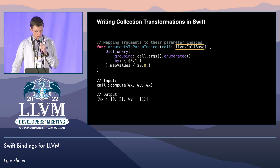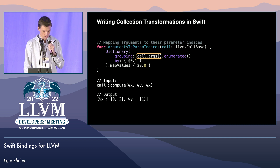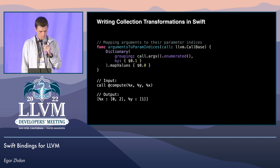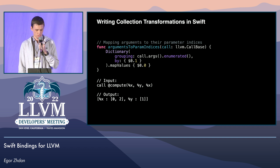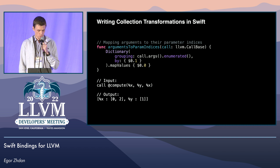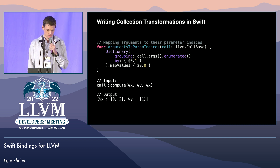Let's take a look at a small example of how we can use LLVM from Swift. Here we have a Swift function that takes a parameter of the C++ type LLVM CallBase. In the body of the function, we call a C++ method args, which returns an instance of a Swift sequence. This allows us to write clear and concise code for collection transformations by leveraging Swift's standard library. As you can see in this code, we use the enumerated method and the dictionary initializer that are provided by the Swift standard library. For instance, if we need to map arguments of a call to their parameter indices, that can be written in a couple of lines of Swift code. Transformations like these can require more C++ code to create a map and insert existing entries into it.